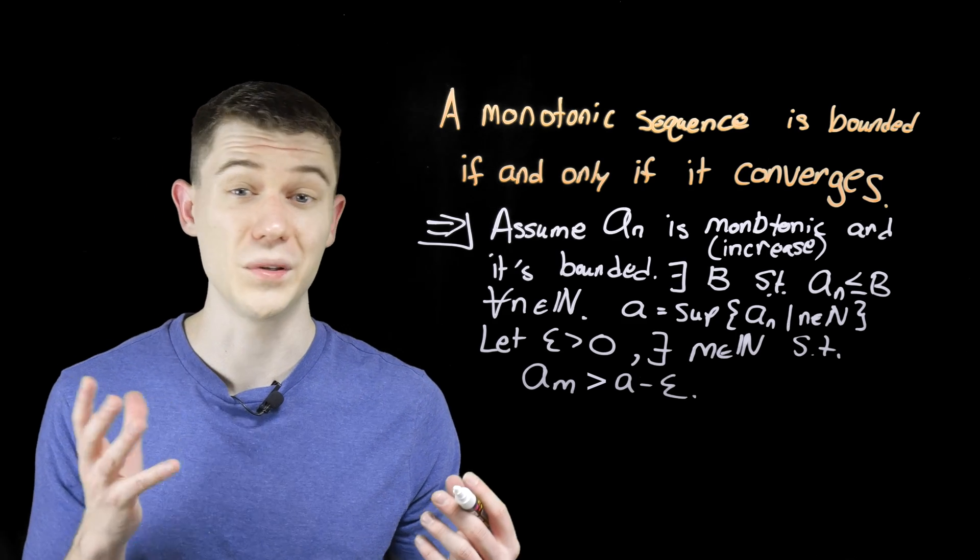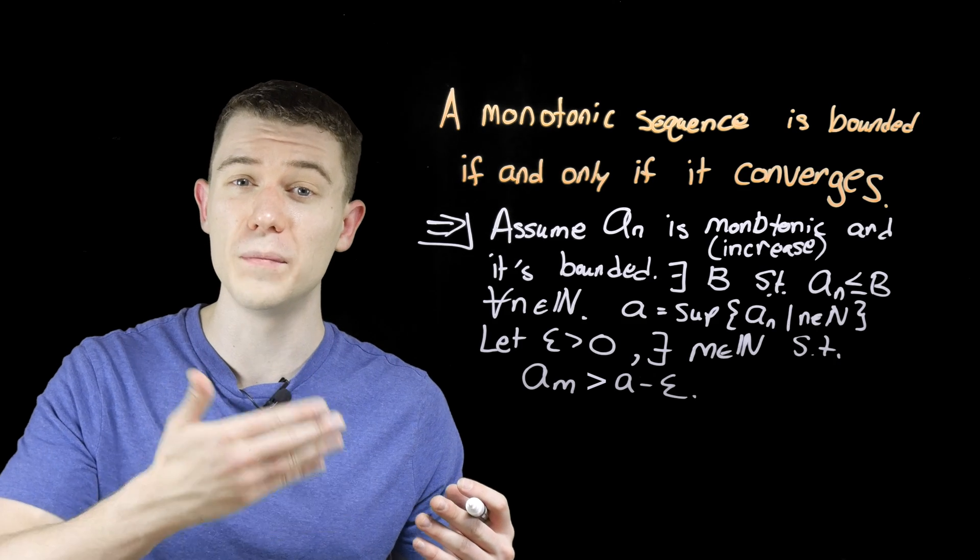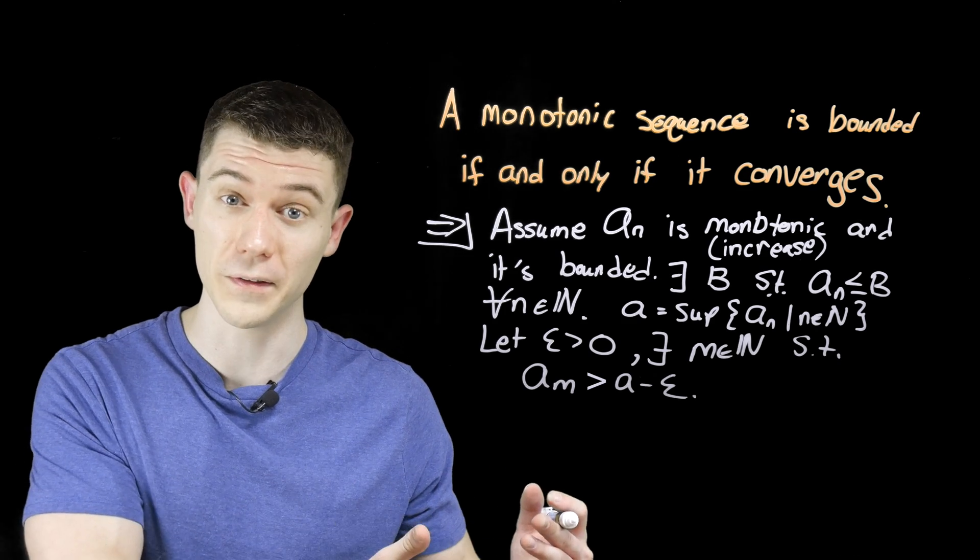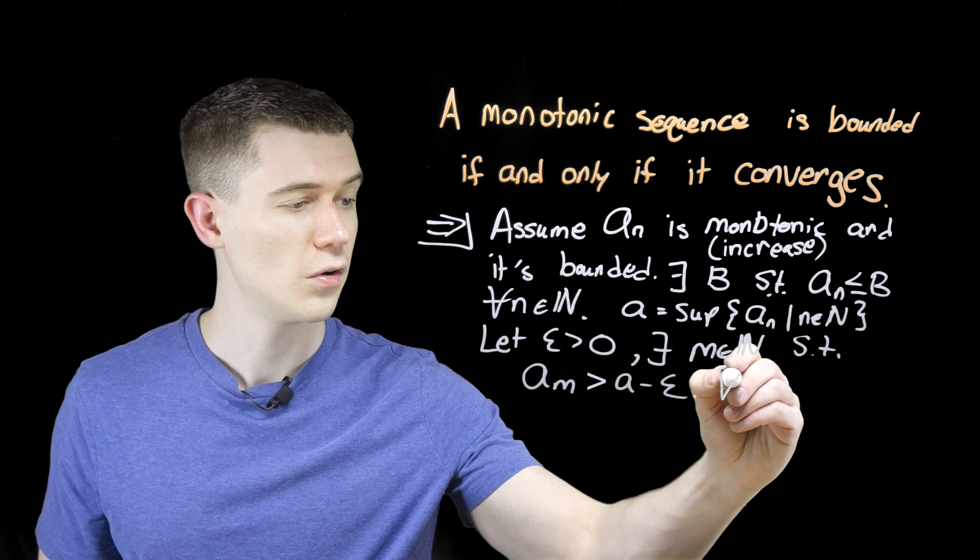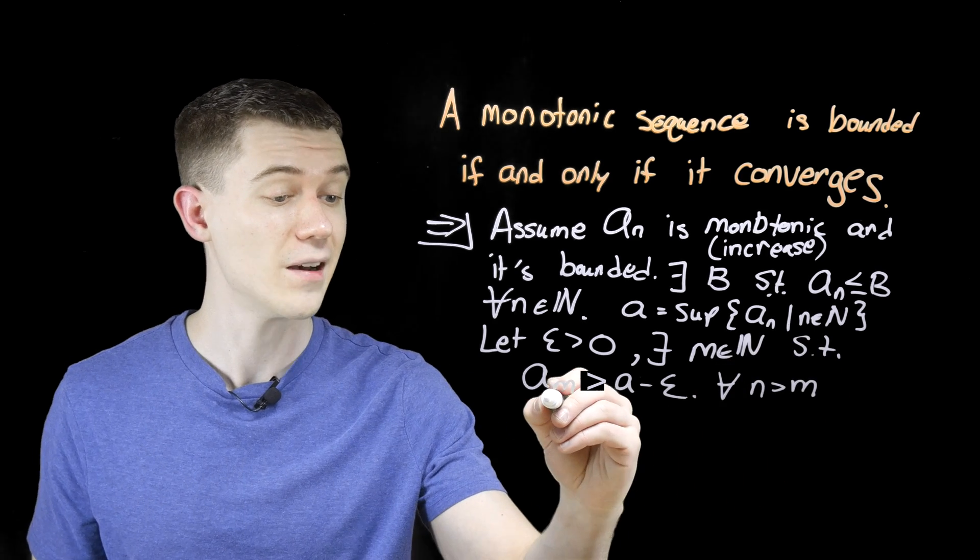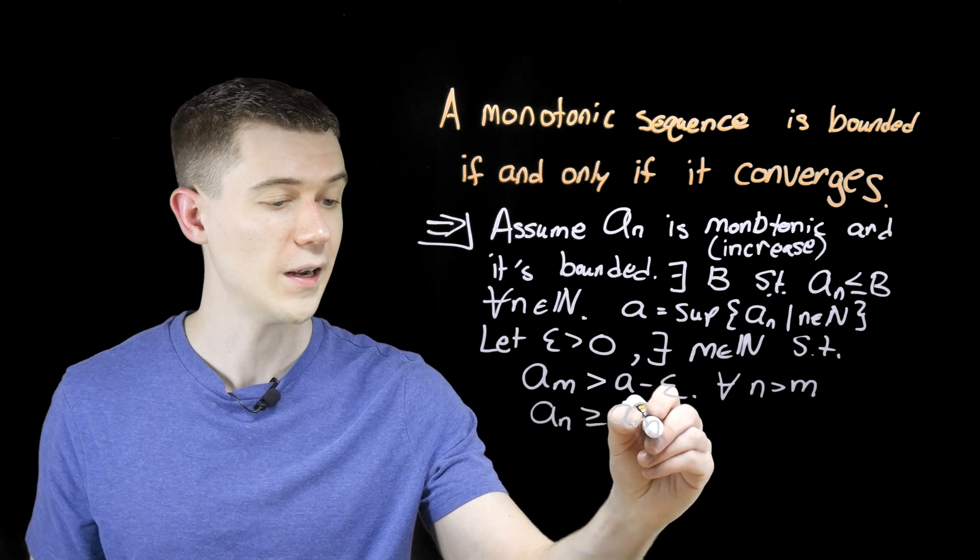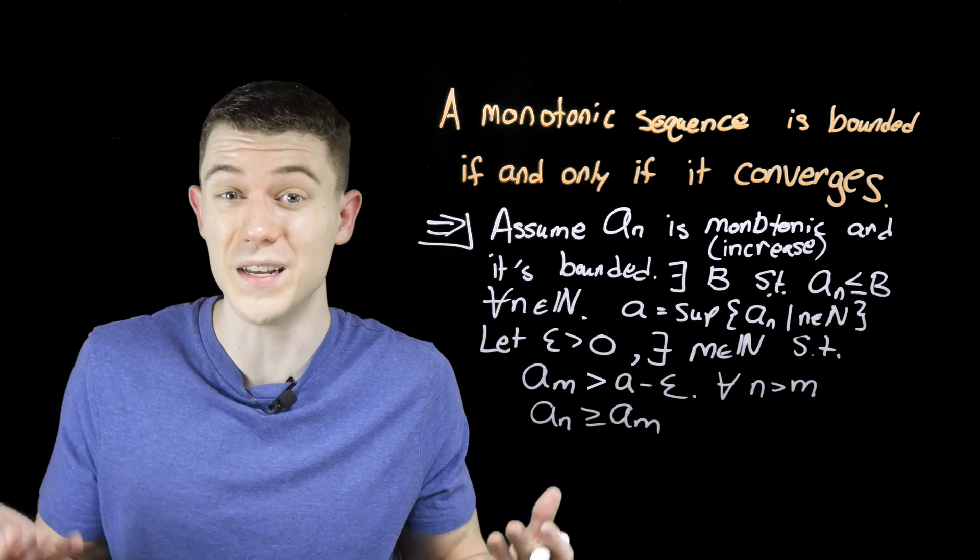What about being monotonically increasing? Well this is going to mean that every element of the sequence is greater than the last. So, for all n greater than m, we must have that a sub n is greater than or equal to a sub m, right? That's what it means for it to be increasing.